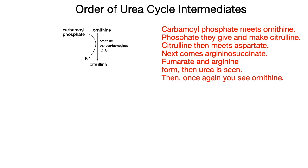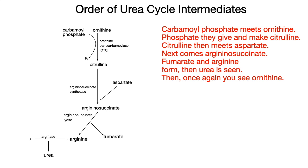Carbamyl phosphate meets ornithine. Phosphate they give and make citrulline. Citrulline then meets aspartate. Next comes argininosuccinate. Fumarate and arginine form — the urea is seen. Then once again you see ornithine.